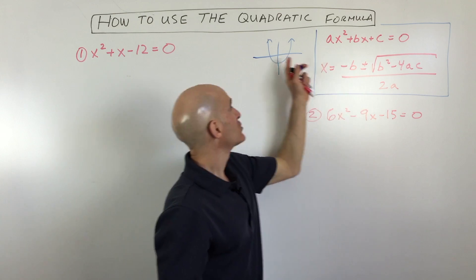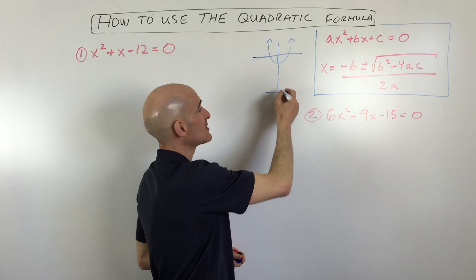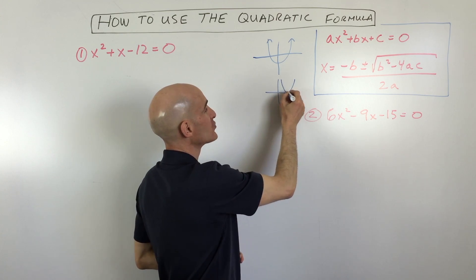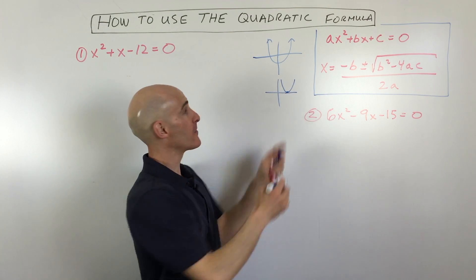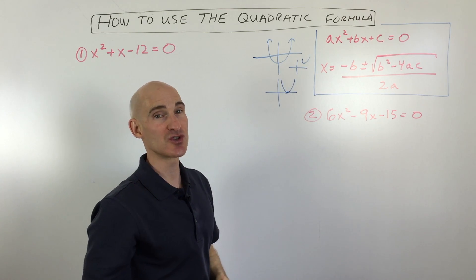So what you can see here too with these parabolas is that sometimes you're going to get two solutions. Sometimes you're only going to get one solution where it just touches at the vertex there. And then sometimes you're even going to get where it doesn't cross the x-axis at all, and there's no solution.